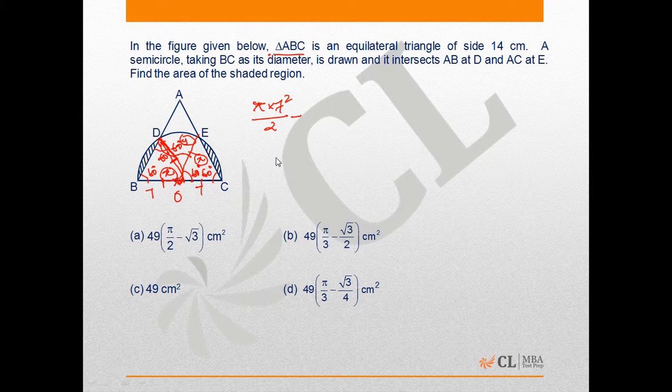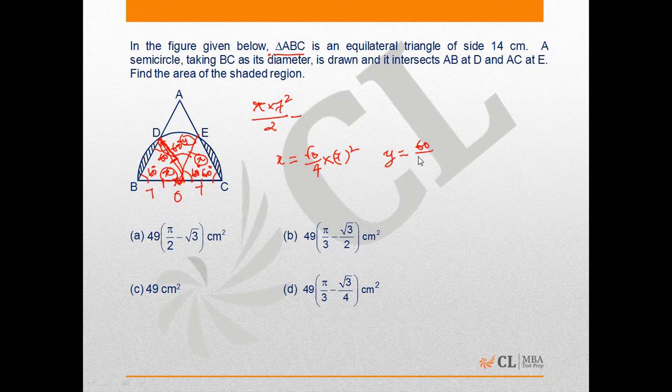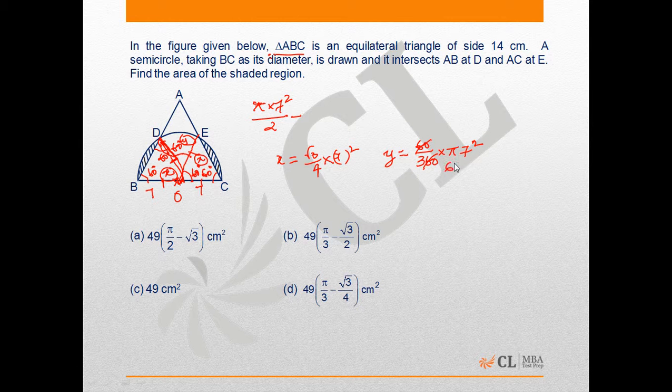If you look at region X, X is √3/4 × side² and we have two X's of this, and the area of the sector Y is going to be 60/360 × π × 7². So this comes out to be 1/6.